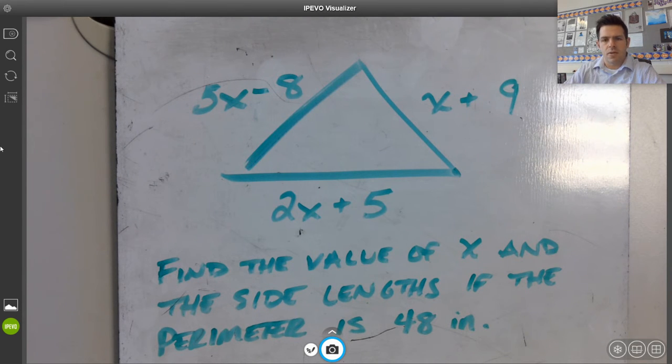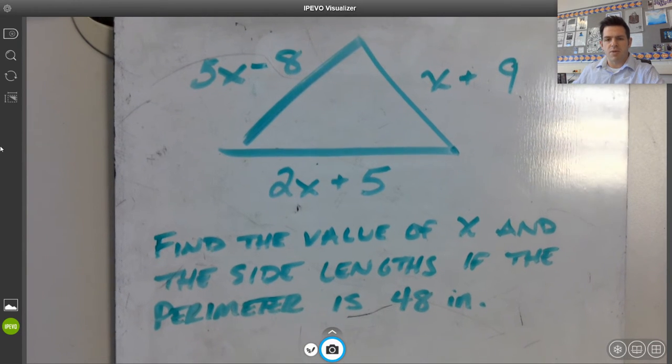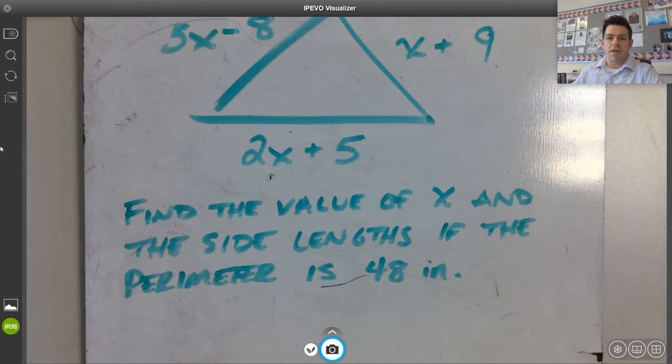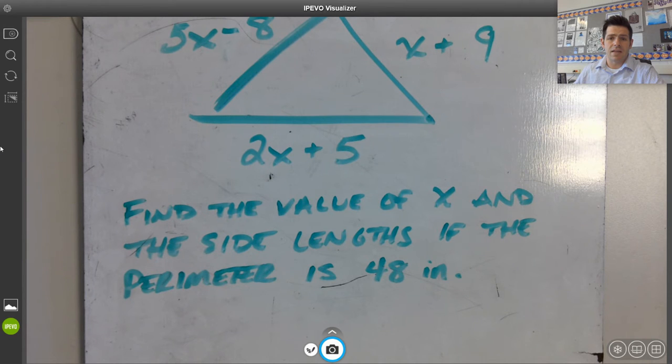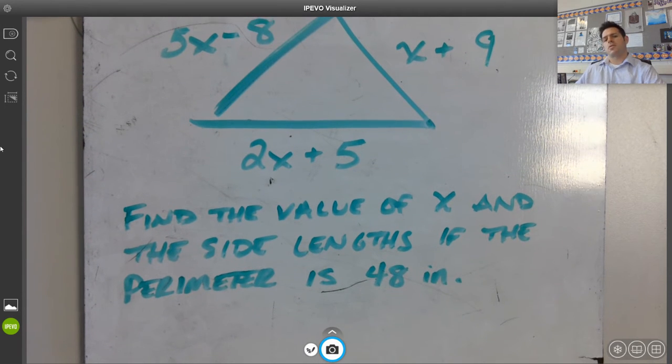5x minus 8, x plus 9, 2x plus 5 are the three different expressions. And we have a question here. Find the value of x and the side lengths if the perimeter is 48 inches.